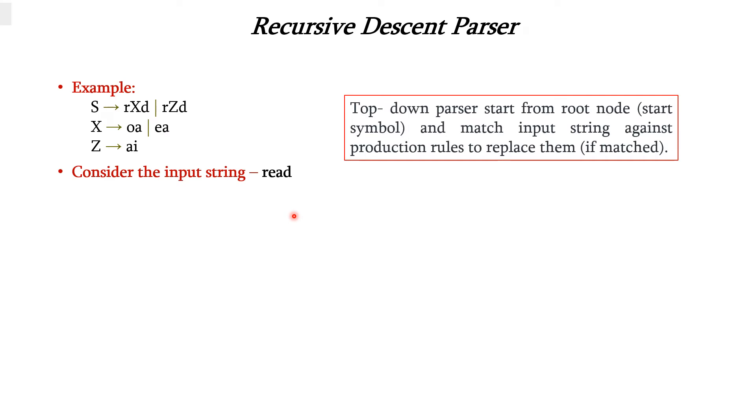Recursive descent parser is a top-down parser. Top-down parser will start from the root node, i.e. start symbol, and matches the input string against production rules to replace them until the match is found for the given input string. Now, let us apply the concept for this input string.